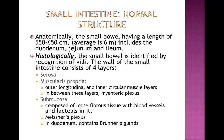We'll begin with the normal histology of the small intestine. Anatomically, the small bowel has an average length of around six meters and includes the duodenum, jejunum, and ileum. Histologically, the small bowel is identified by the presence of villi — only the small bowel has villi, not the large bowel. The wall of the small intestine consists of four layers: serosa, muscularis propria, submucosa, and mucosa.